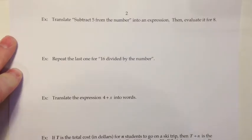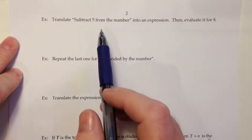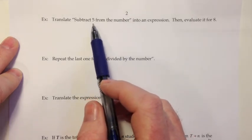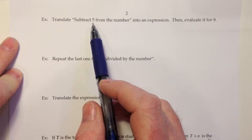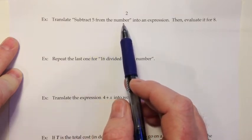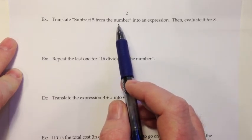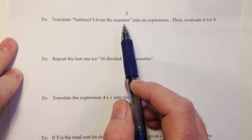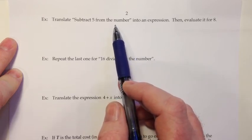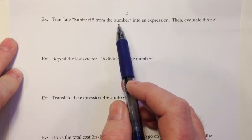We're continuing on in section 2.1. We're going to be asked to take some words and translate those into symbolic expressions. Our first one is to translate subtract 5 from the number into an expression, and then evaluate it for 8. So subtract 5 from the number. 5 is a constant, and then from the number sounds like a variable to me because we don't know what the number is. I would substitute a letter there. The standard thing would be to substitute x, but I often like to use a letter that goes with the word. Since it's the number, I'm going to use an n here.